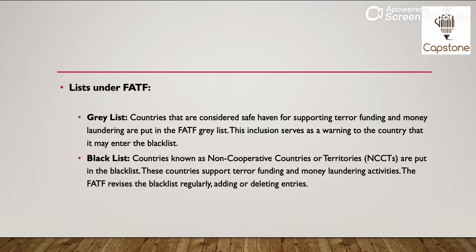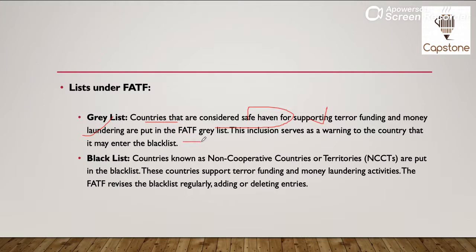Ab ye grey list kya hai aur black list kya hai? Countries aisi hain jo consider ki jati hain safe haven for supporting terror funding and money laundering — unko FATF grey list mein daalta hai. Aur isko daalne ka matlab yeh hai ki ek warning di jati hai us country ko, that agar unhone iske against kaam nahi kiya toh unko black list kar diya jayega.